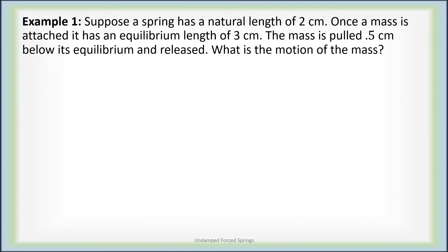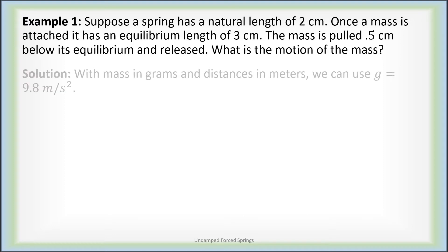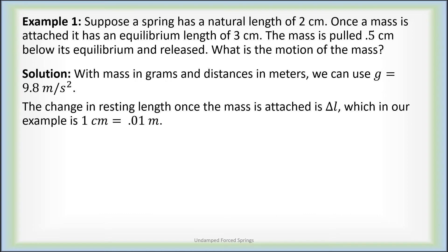Let's apply these ideas to examples. A spring has a natural length of two centimeters. We attach a mass and its equilibrium length is now three centimeters. The mass is pulled half a centimeter below its equilibrium and then released. What is the equation governing the motion? Assuming grams and meters, we use g = 9.8 m/s². The change in resting length once the mass was attached — delta little l — is one centimeter, which is 0.01 meters.